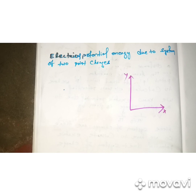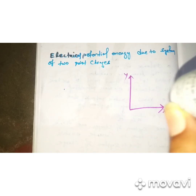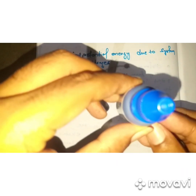First of all I will discuss about potential energy. Potential energy means the energy possessed by a body due to its configuration. Suppose this is the body, and that body moves from one point to another, covering a certain distance from a lower position to an upper position. That distance represents a height. Due to change in configuration, the body acquires some energy, and that energy represents potential energy.